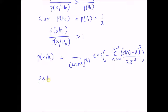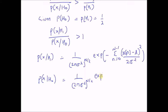Under the null hypothesis, the probability distribution is given by (1/(2πσ²))^(N/2), the normalizing constant, multiplied by exponential of minus the sum from n=0 to N−1 of x²(n) over 2σ².